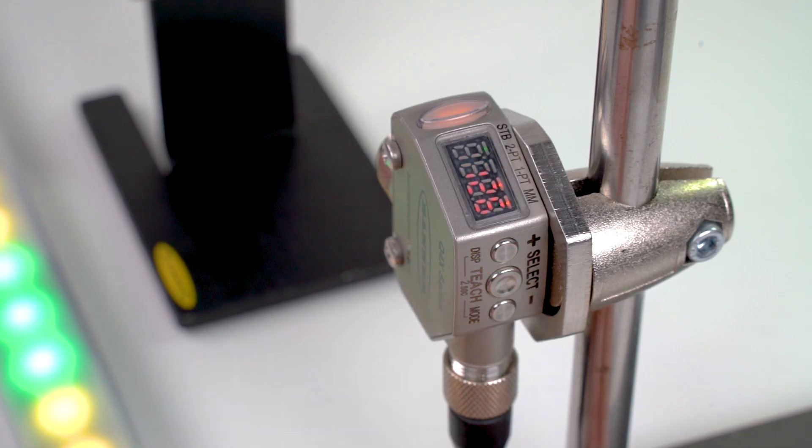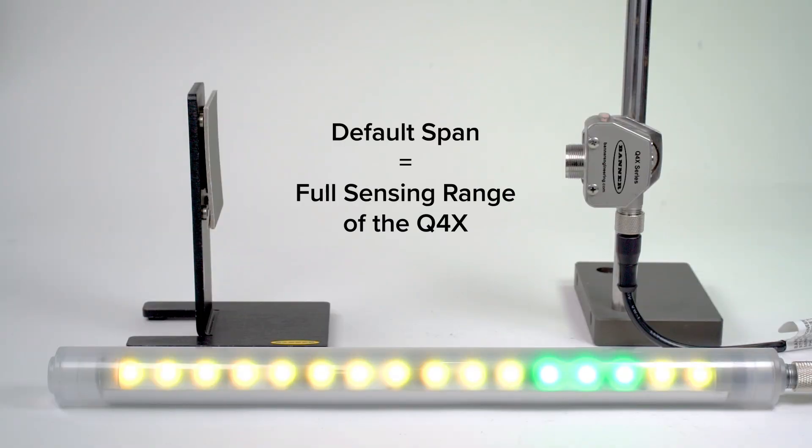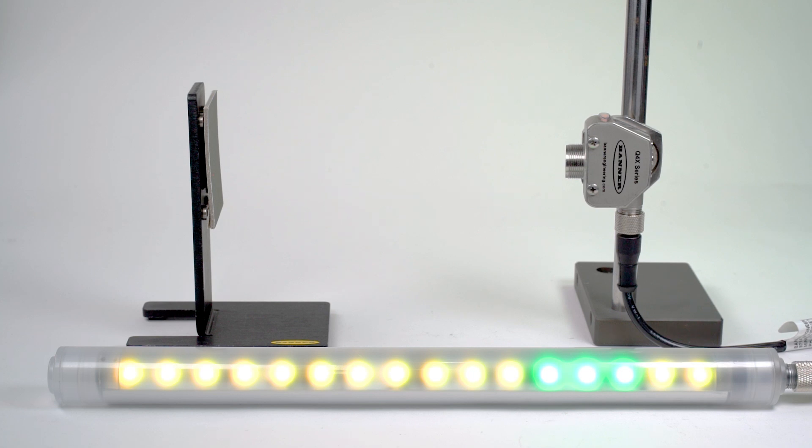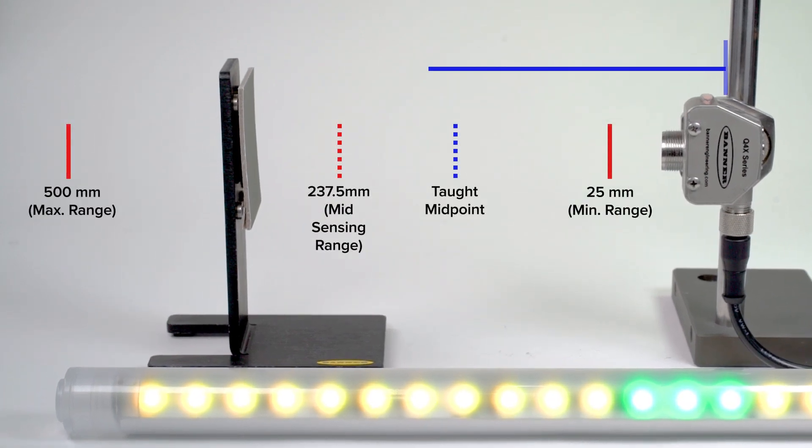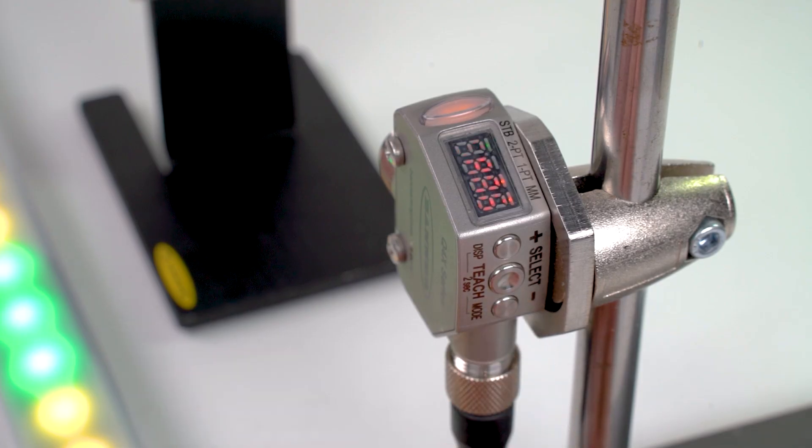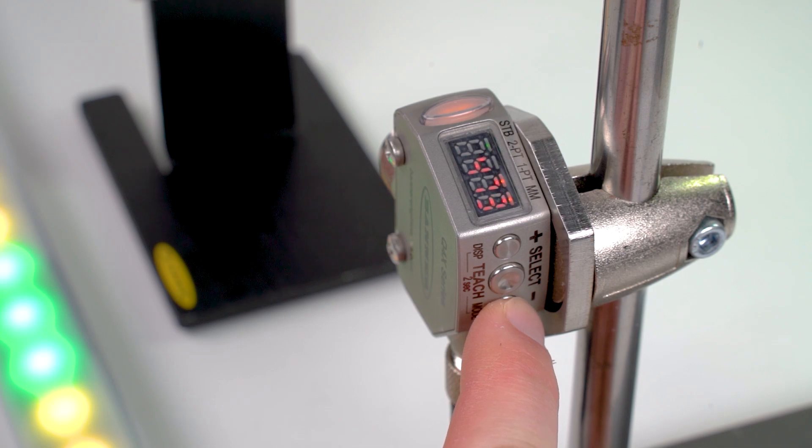The default span of the measurement range is equal to the full range of the sensor, so you will likely have to adjust it manually after teaching the sensor to ensure that you are making use of the full analog signal. For example, a 500 millimeter model will have a default span of 475 millimeters. To dial in the span, begin by pressing the minus button and then use the plus and minus buttons to adjust the span as necessary.